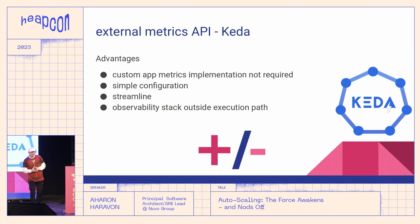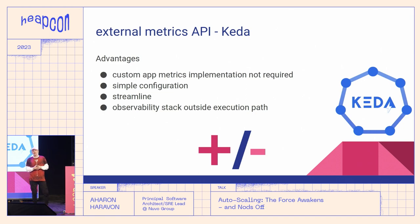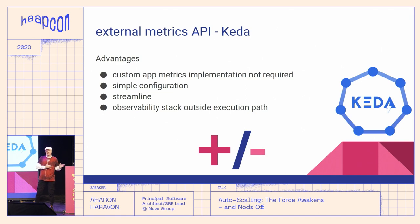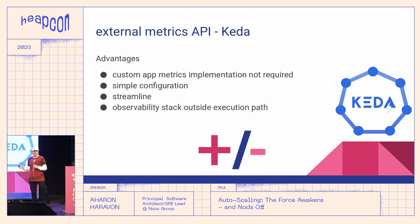This is where KEDA jumps in. In many cases the metrics your application should scale upon can be represented by a property of a middleware system — like a message broker, a database state, or similar. In those cases we do not need to implement any metrics for the purpose of autoscaling; we can just configure KEDA, and its configuration is very simple. It also streamlines the development process as developers remain independent when defining autoscaling for their own service, and it leaves observability stack components like Prometheus outside of the critical execution path.